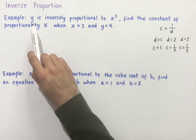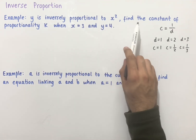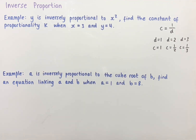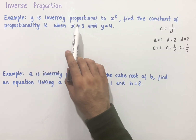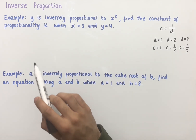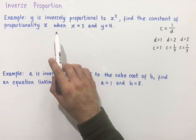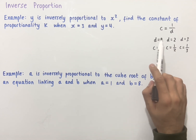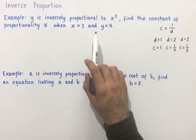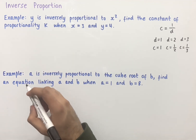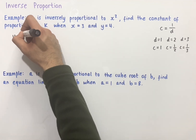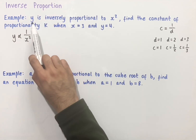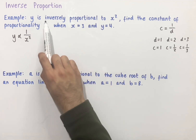The first example says y is inversely proportional to x squared. Find the constant of proportionality k when x equals 3 and y equals 4. If y is inversely proportional to x squared, then that can be thought of as y being directly proportional to 1 over x squared, linking back to the idea that as one variable increases, the other should decrease.